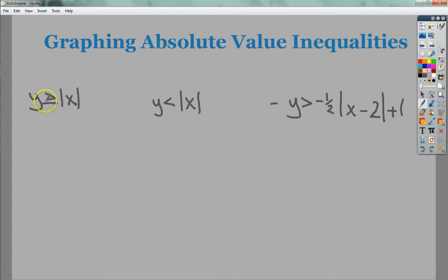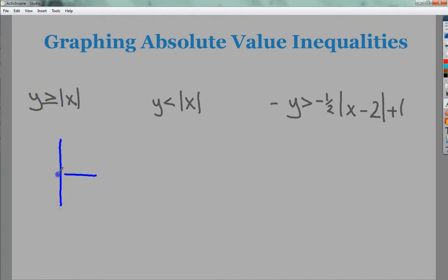I'm going to start out with the parent function: y is greater than or equal to the absolute value of x. I just need to draw the absolute value of x. Since there's a line underneath, I'm going to use a solid line here. All I have to do now is shade. I'm looking for it to be greater than, so I'm going to shade up.